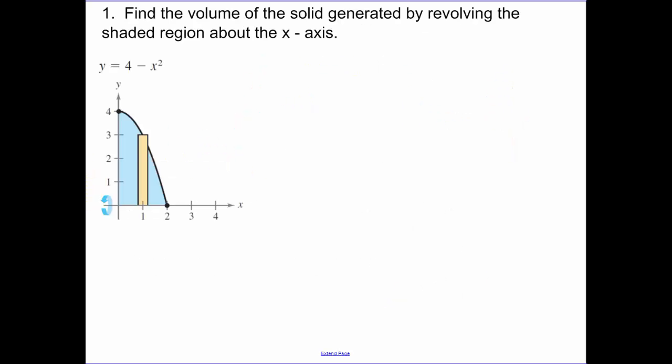So our first example, find the volume of our solid generated by revolving our shaded region about the x-axis. So again, keep in mind, when I'm taking the shaded region and I'm revolving it about our axis, we're getting a circle. And there's an infinite amount of these little shaded areas in here.